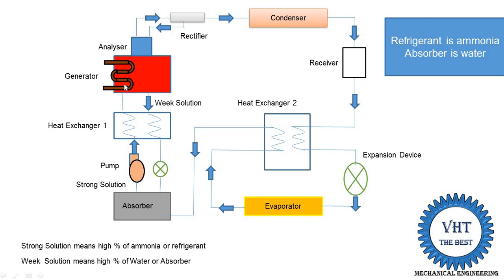When we supply a high-temperature strong solution into the generator, the work done required in the generator is reduced. When the work supplied to the generator is reduced, the COP of the system increases. Heat exchanger 2 sub-cools the refrigerant, increasing the refrigerating effect. Heat exchanger 1 reduces the work done in the generator. The working cycle is now complete, and the system continuously runs based on the circulation of refrigerant and ammonia solution.